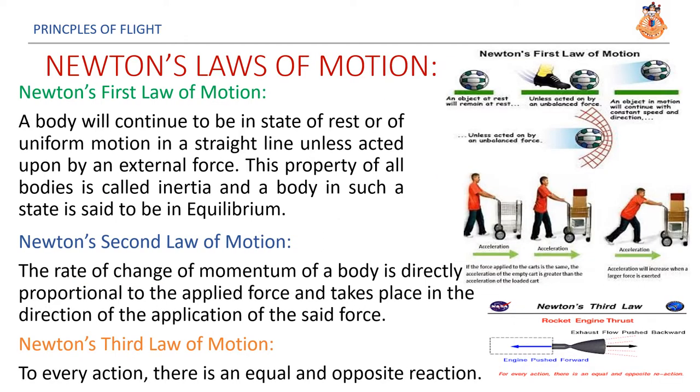Acceleration is equal to force by mass. Newton's laws of motion. Newton's first law of motion. A body will continue to be in the state of rest or of uniform motion in a straight line unless acted upon by an external force. This property of all bodies is called inertia and a body in such a state is said to be in equilibrium. Newton's second law of motion. The rate of change of momentum of a body is directly proportional to the applied force and takes place in the direction of the application of the said force. Newton's third law of motion. To every action, there is an equal and opposite reaction. This is by far the most easy of all the three laws.